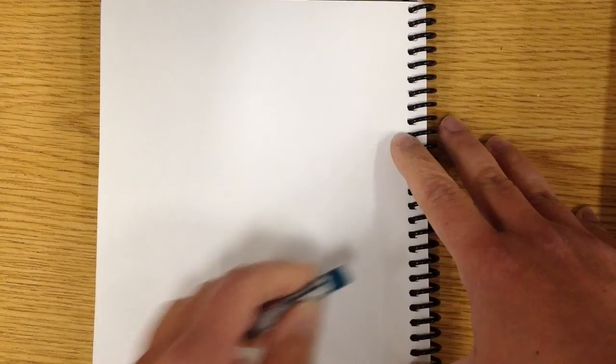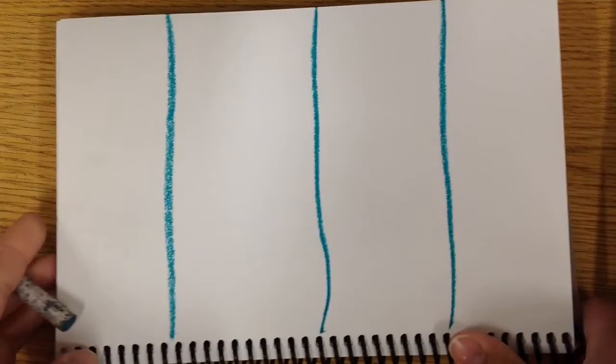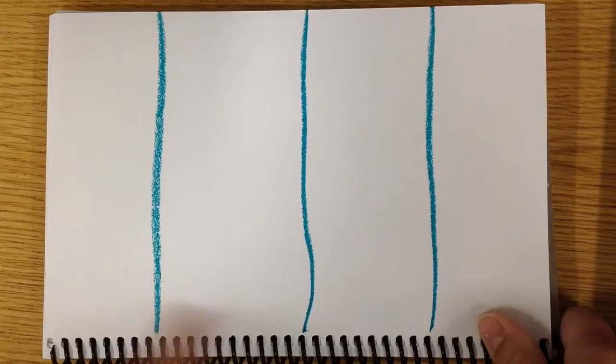First thing I want to do is divide this paper up into four different sections since I'm going to show you how to do four different techniques. So I'll draw a line in the middle of my paper and then divide it up the other way. I've got a 6 by 9 little notebook here of 80 pound paper, but you can use whatever you have on hand.